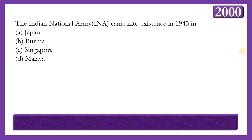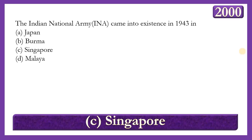Next question: The Indian National Army (INA) came into existence in 1943 in which place? Options: Japan, Burma, Singapore, or Malaya. The answer is option C — Singapore. The INA was an armed force formed by Indian nationalists in 1942 in Southeast Asia during World War II, aiming to secure independence with Japanese assistance. Initially formed under Mohan Singh, it was revived under Subhash Chandra Bose in 1943 in Singapore.